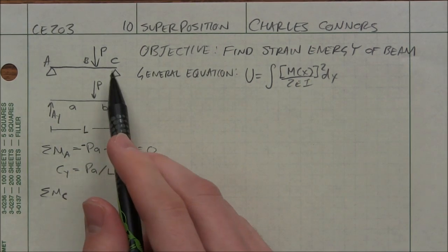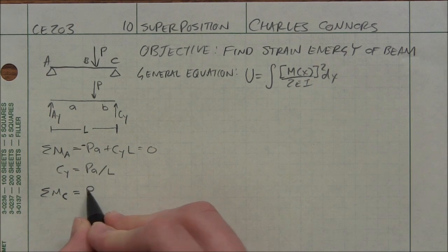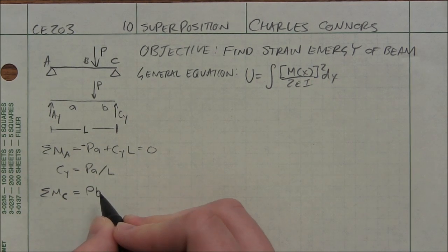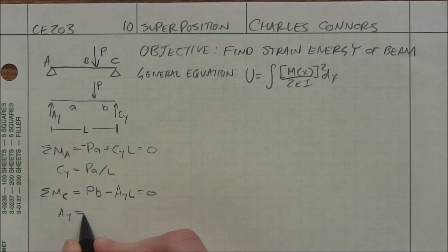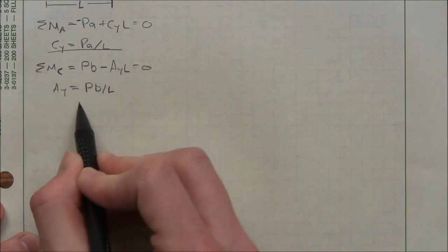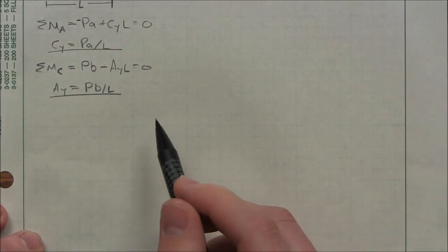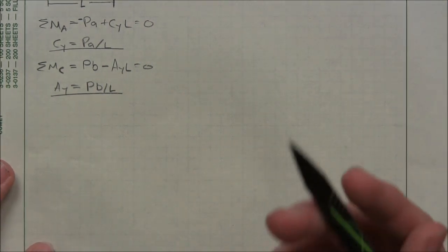Then I can sum the moments on side C. And here I have positive PB. And I have a negative AYL equals 0. So AY equals PB over L. So this gives me what my forces are on both sides, which helps me when I'm trying to derive my moment equation.